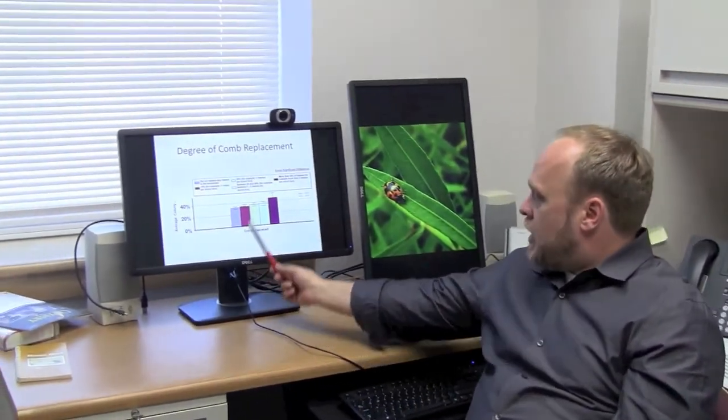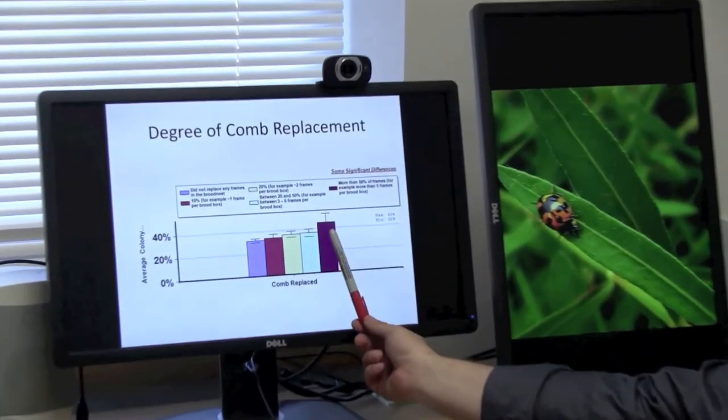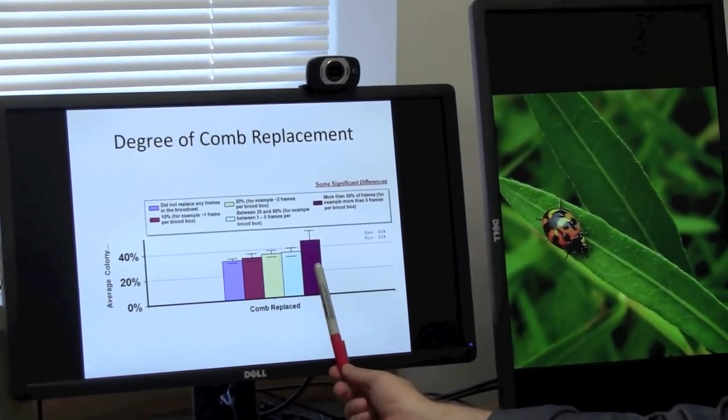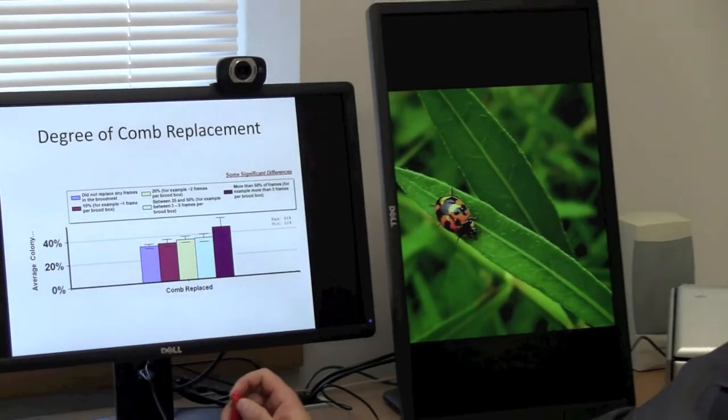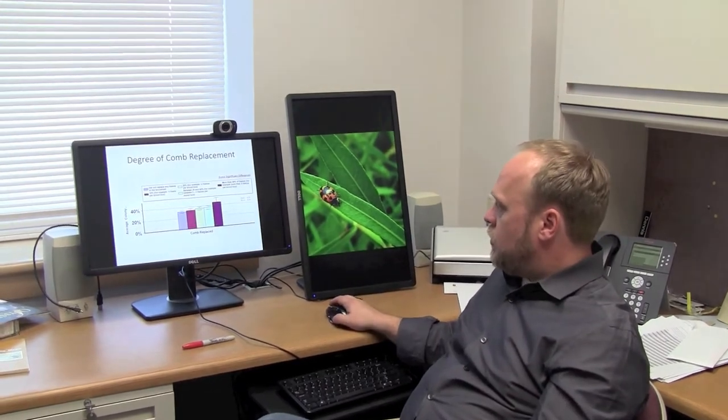And so if it's in there for a long time, it's sort of this sponge of chemicals that might be bad for the colony. So replacing it and getting rid of that disease load and pesticide load may have benefits. What you can see here is that those people who replaced more than 50 percent of their brood comb with new comb lost significantly more colonies than those who did not replace frames at all. So there seems to be an upper limit to the benefit of replacing large amounts of comb.